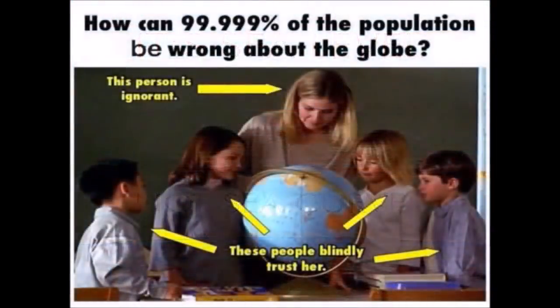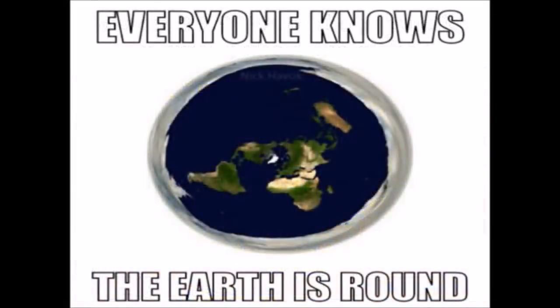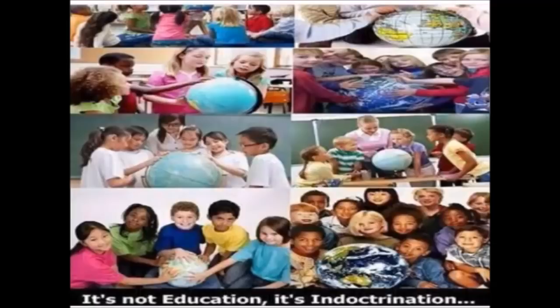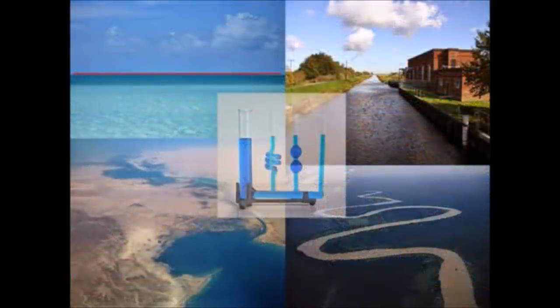The teachers offer proofs to show that the earth is round, but the proofs they offer amount to nothing. When the children go to school, the teacher tells them the world is round, and of course they believe it, and they do not ask how it is round. They are young and they know very little. When they grow up, they still believe the earth is round and in motion, and so in turn they teach this to others. The water is flat, which proves that the earth is flat and stationary.